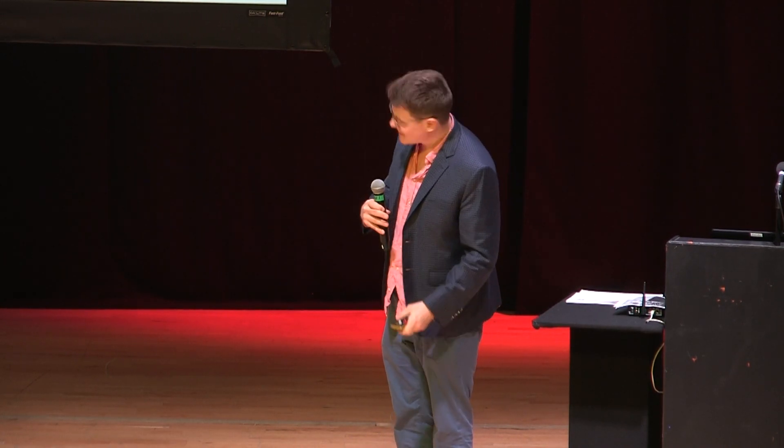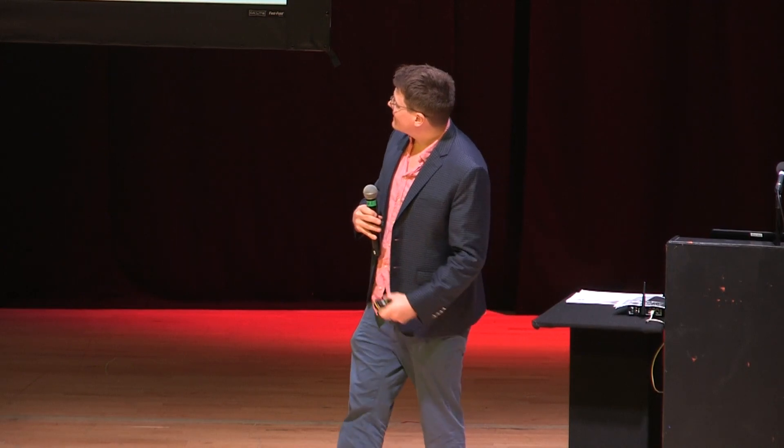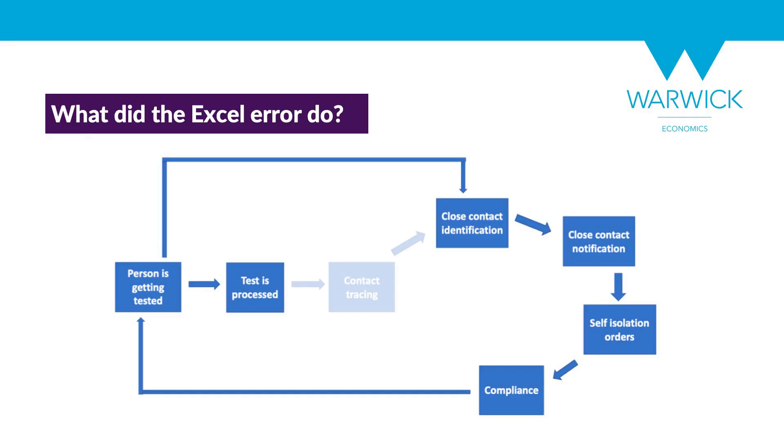This resulted in about 16,000 cases of people who tested positive not being referred to contact tracing. Since the files were not ordered in any way — first in, first out — these 16,000 cases are pretty much randomly scattered about. This gives us a natural experiment: we know who these people are and where they live, so we can see what happened to the pandemic in those places, effectively meaning contact tracing was turned off for these 16,000 people.